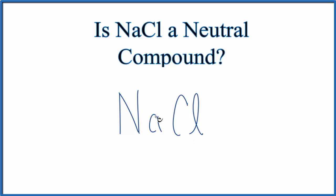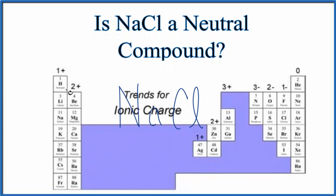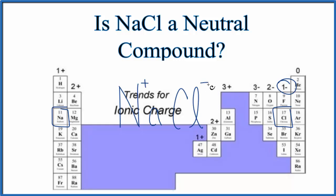So let's look up the charge on Na and Cl using the periodic table. You can see the pattern here for ionic charge: group 1 they're all 1+, group 2 they're 2+, skip the transition metals and we go across here. For sodium, that's right here in group 1, so sodium will have a 1+ ionic charge. And chlorine — that's over here in group 17, sometimes called 7A — that'll have a 1- ionic charge.